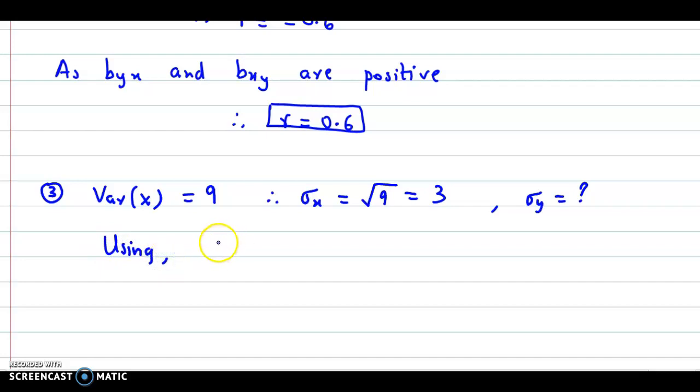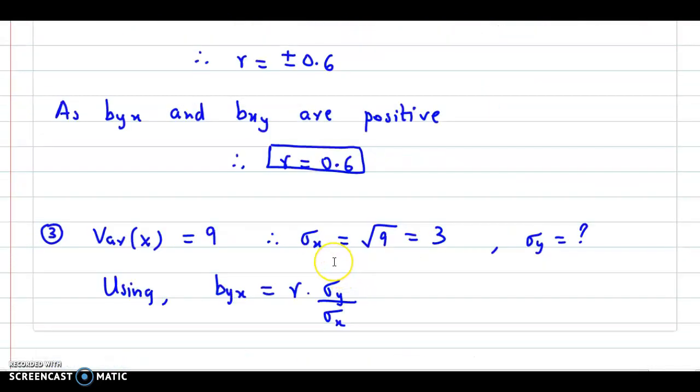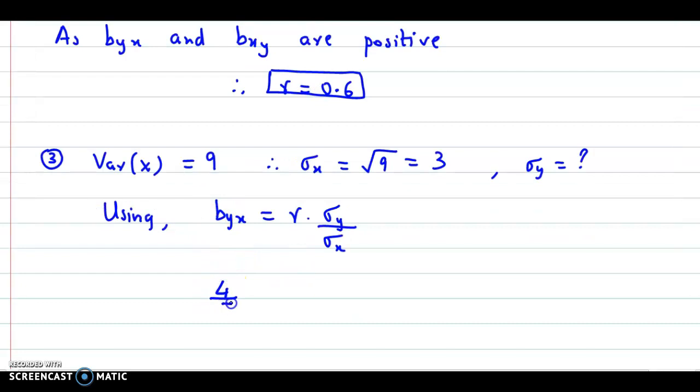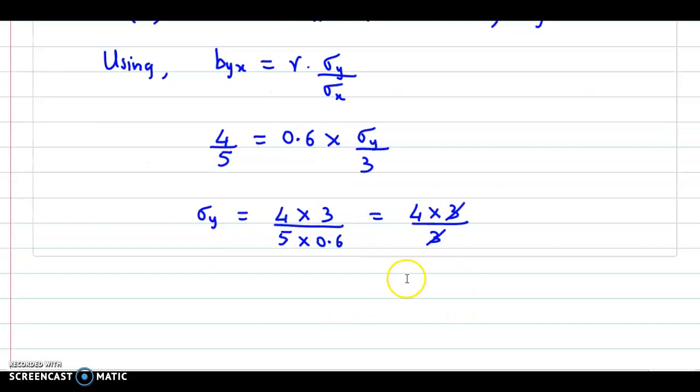We know byx is r into sigma y upon sigma x. byx value we found is 4 by 5. R's value is 0.6. Standard deviation of y is missing. Standard deviation of x is 3. We simplify this. 4 by 5 equals 0.6 times sigma y over 3. So sigma y equals 4 times 3 upon 5 times 0.6, which is 4 times 3 over 3. So standard deviation of y equals 4.